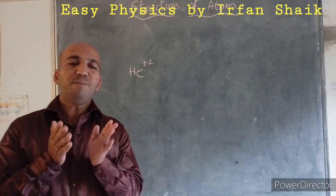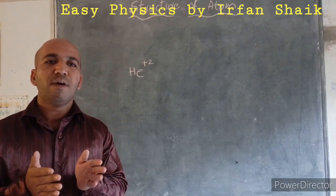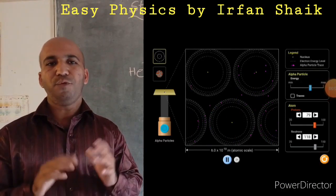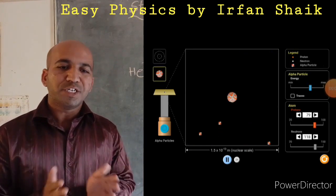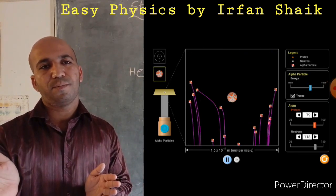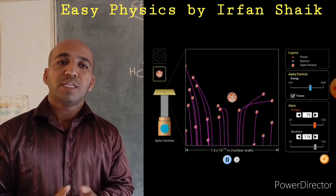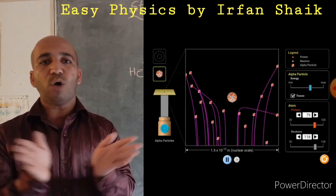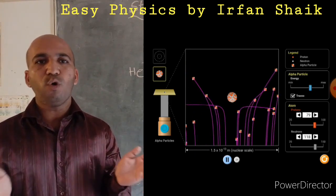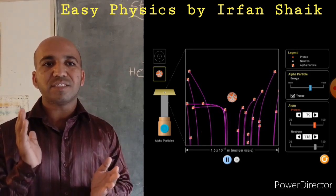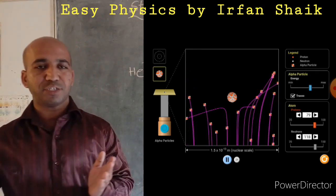See, some alpha particles, they have penetrated through the gold foil. Few of them are deviated a little bit. And few of the alpha particles, they have deviated with the large angles. But only one from 1 lakh alpha rays, it has came back in the same direction.